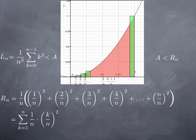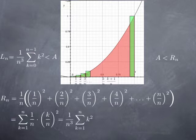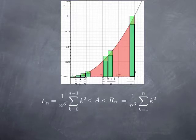The total green area, of course on the picture I didn't draw all the rectangles, is bigger than the red area, and can be expressed as the sum for k equals 1 to n of rectangles with one side of length 1 over n and the other side k over n squared. Multiplying through we get k squared over n cubed, and just as for Lₙ, the 1 over n cubed doesn't depend on k and can be factored out of the sum. So we obtain 1 over n cubed multiplied by the sum from 1 to n of k squared. That's an estimate from above, and now we have the area between Lₙ and Rₙ, which depend on n.